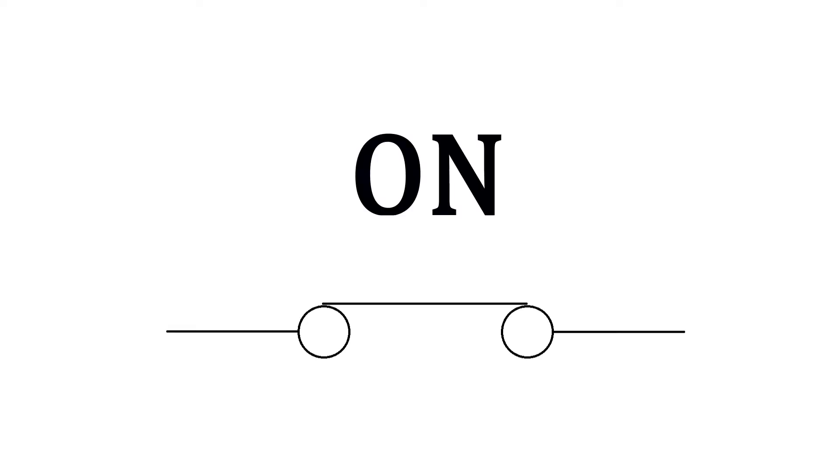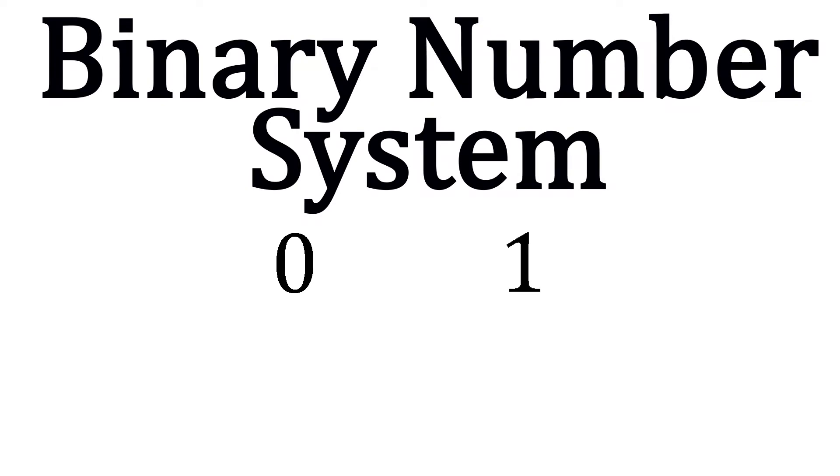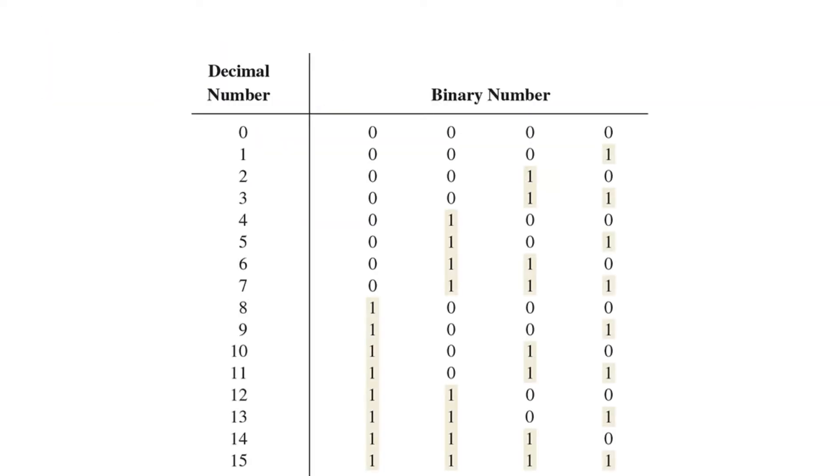We have seen how the base 10 number system works by using the digits 0 through 9 and then adding place values to create numbers bigger than 9. Digital circuits, on the other hand, only understand on and off, high or low, true or false. So for a digital circuit to count, there can only be two digits: 0 and 1. This is called the binary number system. Fundamentally, it works the same way as the decimal number system.